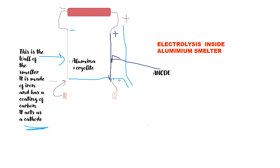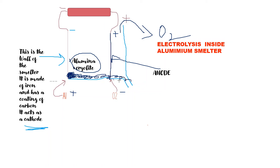Inside the smelter, alumina and cryolite are mixed and electricity is passed. When current flows, the aluminium ions get attracted to the cathode (negative) and the oxygen ions are attracted to the anode (positive). Aluminium is a positive ion and oxygen is a negative ion. The oxygen is released outside as gas. Aluminium is formed at the cathode and is tapped out through a vent. This is how electrolysis works inside the aluminium smelter and we get aluminium.